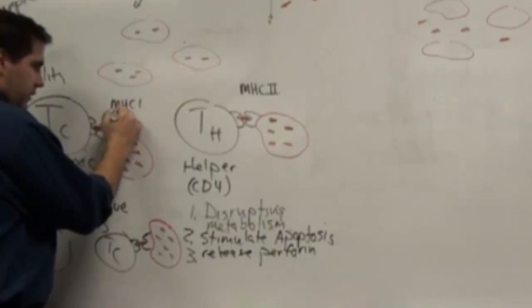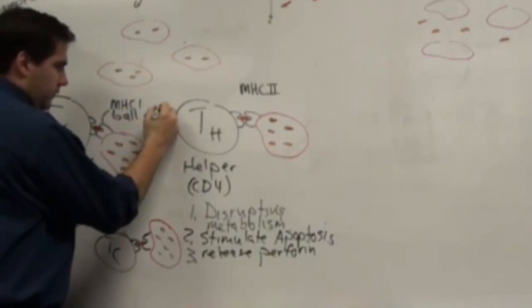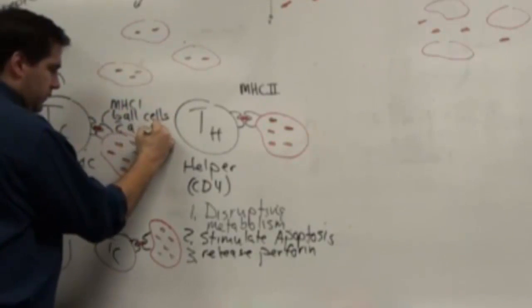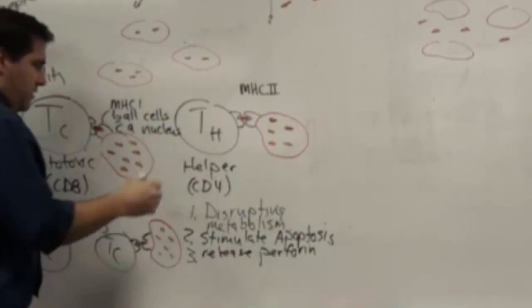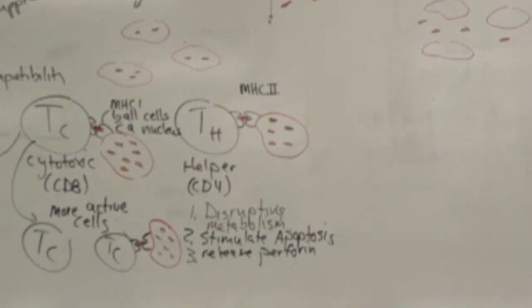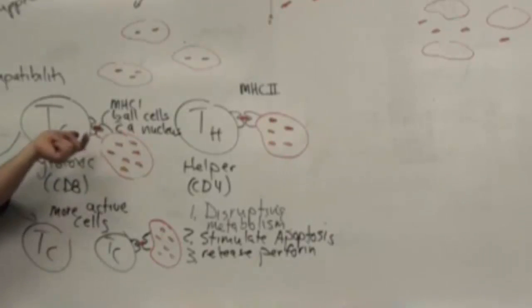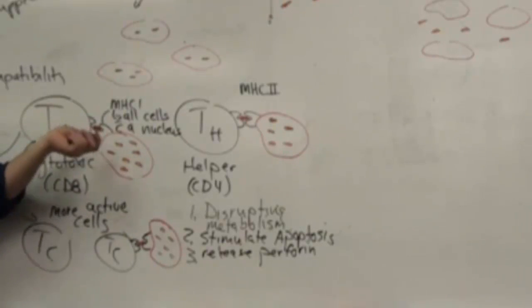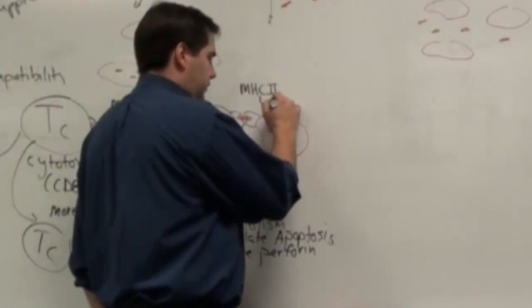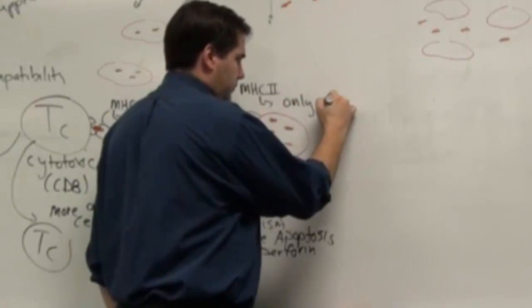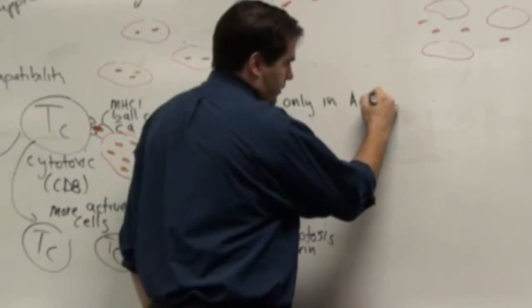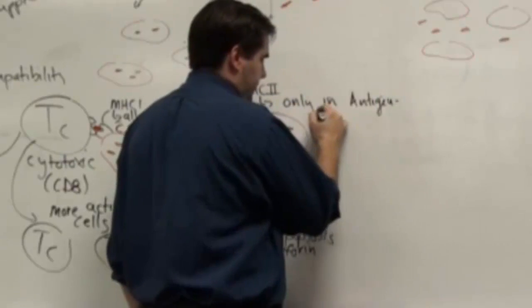Because this MHC is in all cells with a nucleus. You have to have a nucleus in order to make a protein. So like red blood cells are off this because they don't have a nucleus. But every other cell can make this MHC1. So it means every other cell, when infected, can call in the TC cell. MHC2 is only in something called an antigen-presenting cell. And these tend to hang out in lymph nodes.